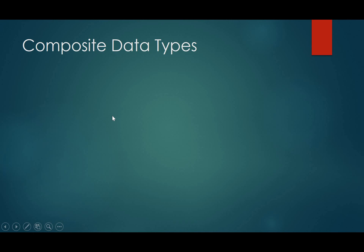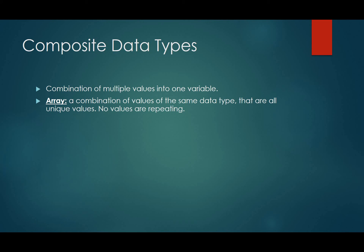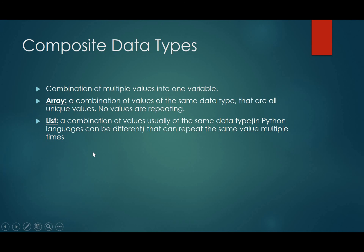Then we have composite data types. Now, composite data types allow us to store multiple values in one variable. So that's really useful. There are two types that I'm going to talk about today. So there's an array, which is a combination of values of the same data type that are all unique values and they're not repeating. Then another type is called a list, which is a combination of values usually of the same data type in most programming languages. However, in Python, they can actually be of different data types. So that's actually really useful. So we'll be using lists, allowing us to store data of different types in one variable, which is going to be nice. And with lists, you can also repeat the same value multiple times.